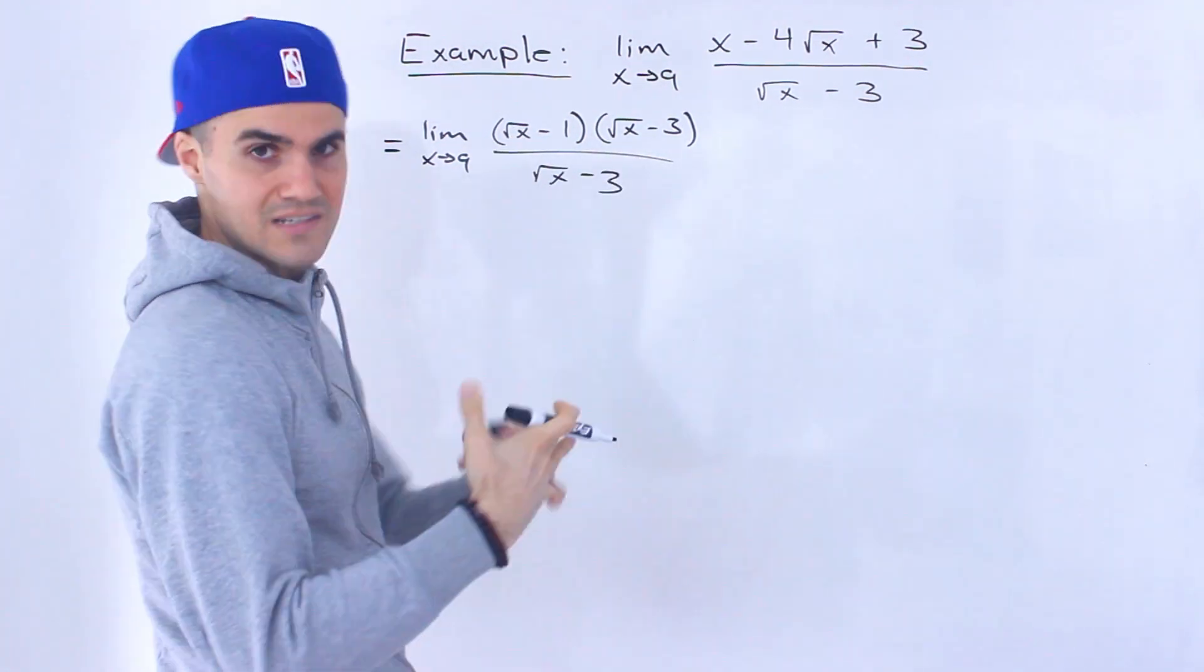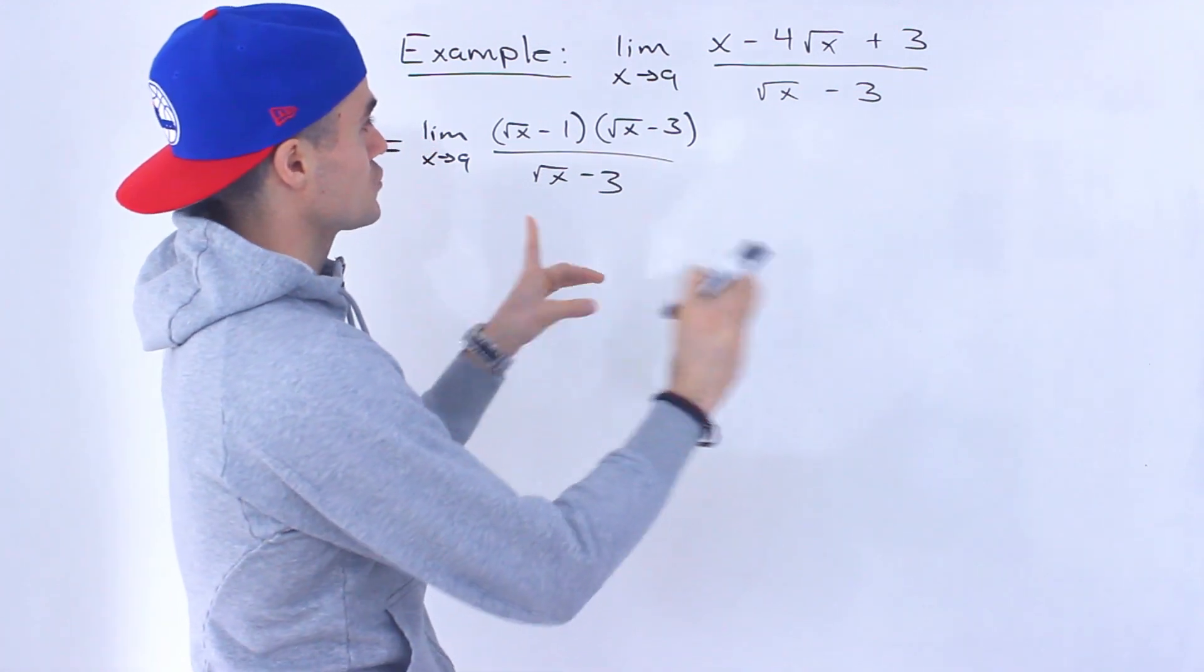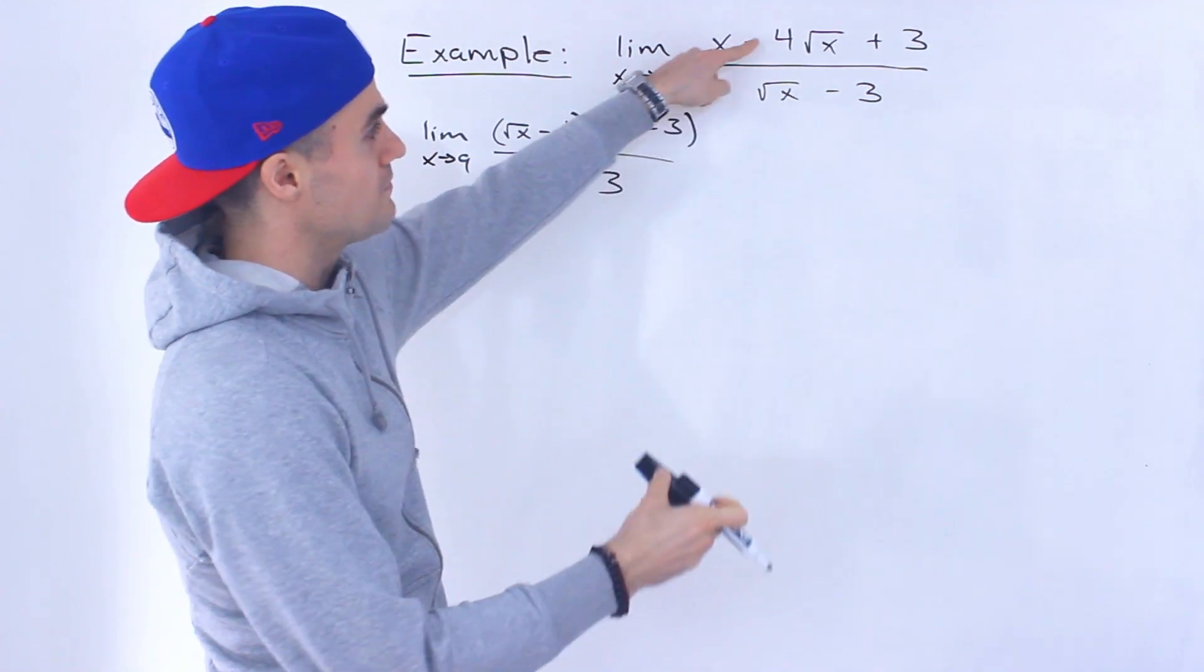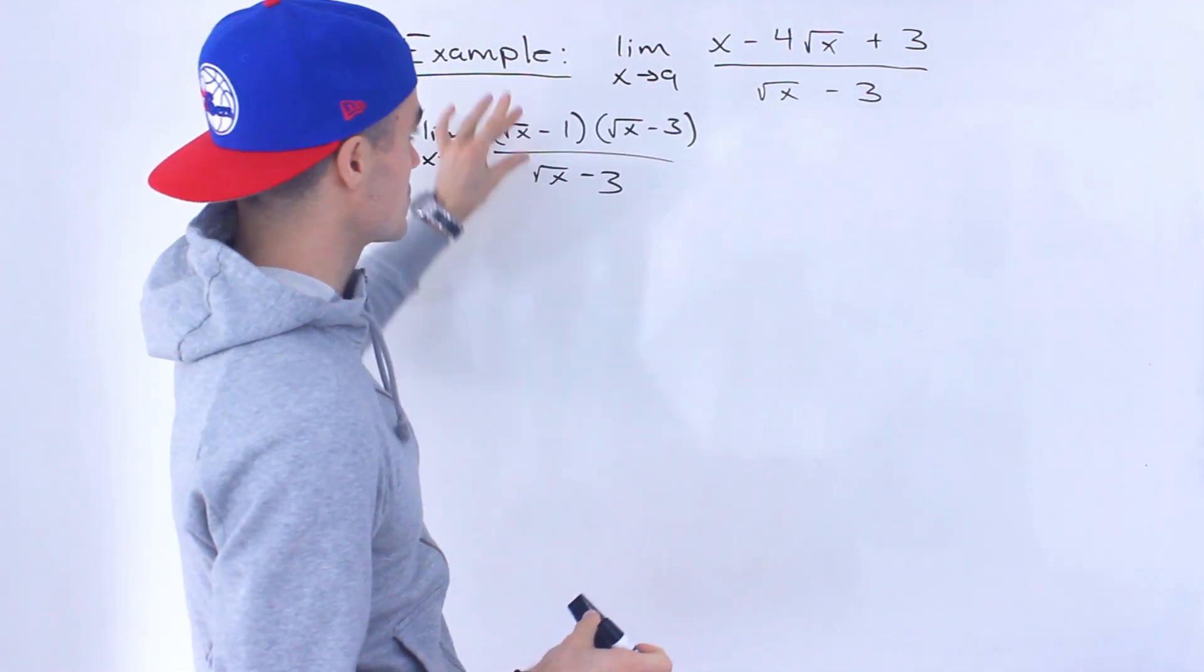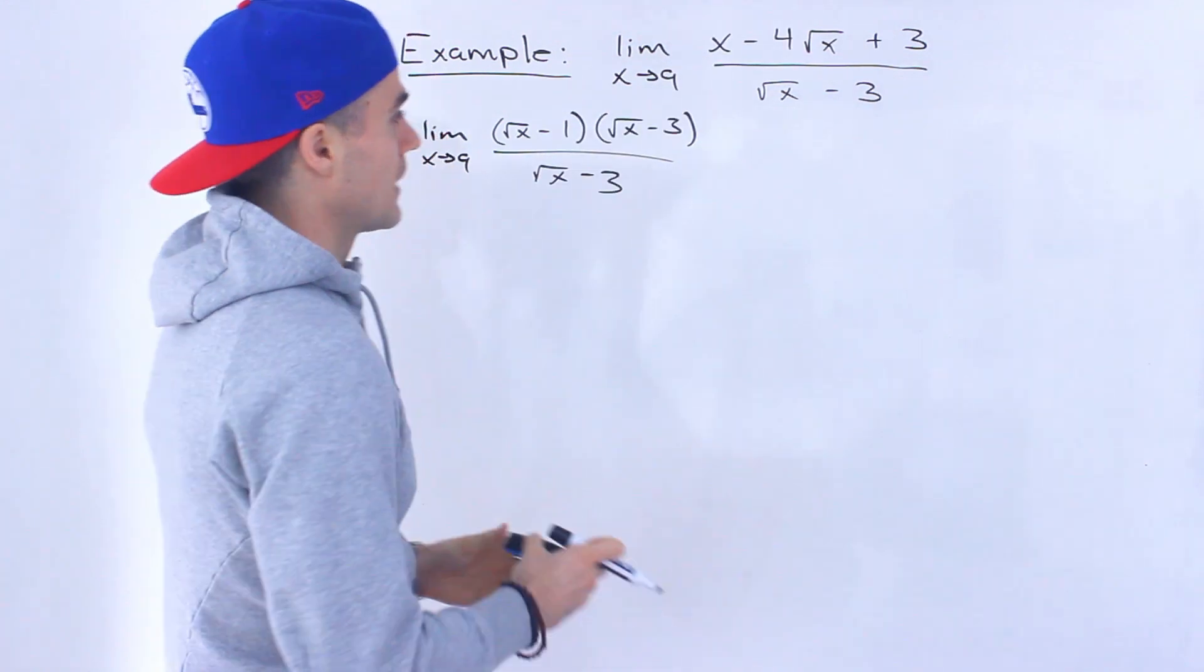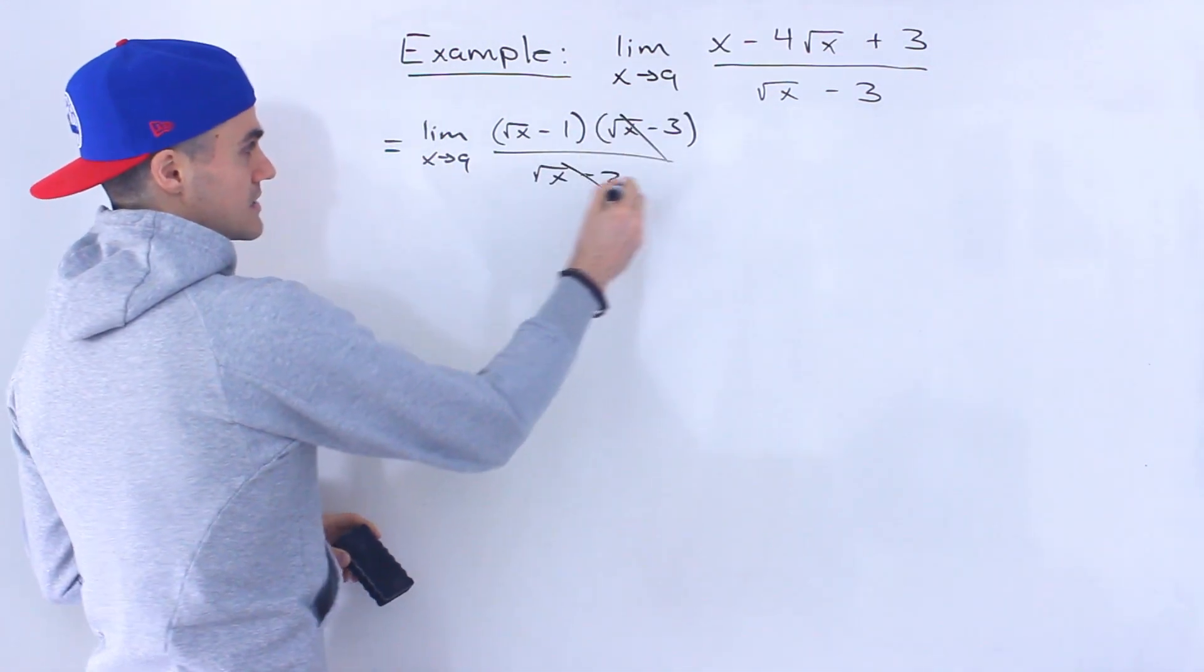If you were to take these two brackets and foil them out, you're going to end up having two square root terms, you simplify them, you'd end up getting negative 4 root x in the middle. So if you expand this, if you foil it out, you would end up getting that. And so then these cancel out.